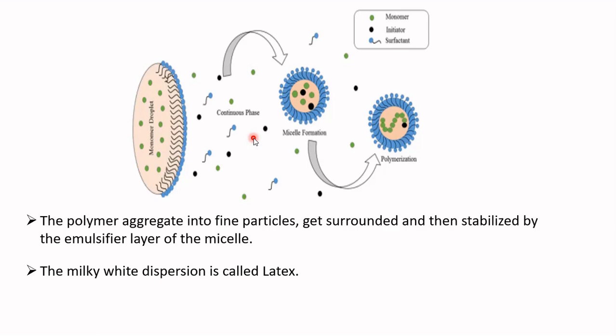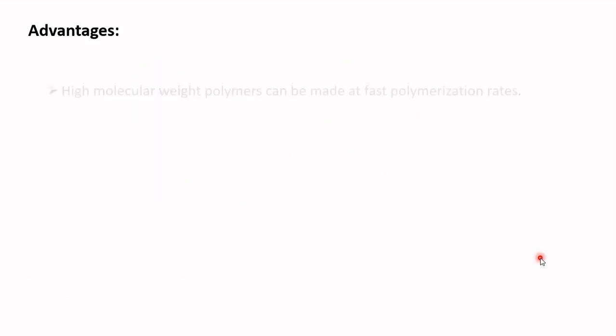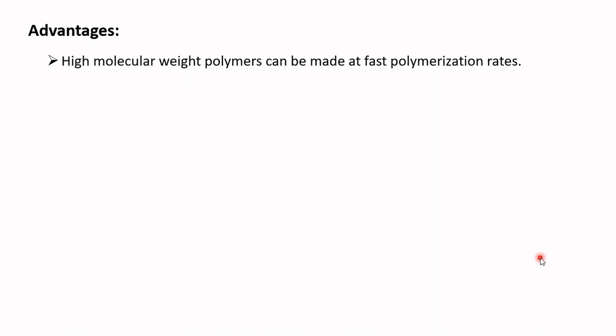The latex can be used directly for making water-soluble emulsion paints. The polymer can be isolated from the latex by destabilizing the emulsion using an electrolyte, or by spray drying or freezing. Examples of polymers prepared by emulsion polymerization include synthetic rubber, styrene-butadiene rubber, polybutadiene, and polychloroprene. High molecular weight polymers can be made at fast polymerization rates using this technique.